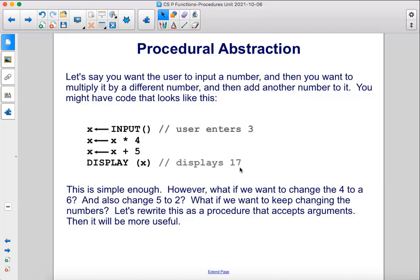This is simple enough. However, what if we want to change the 4 to a 6 and also change the 5 to a 2? What if we want to keep changing the numbers? Let's rewrite this as a procedure that accepts arguments. Then it will be more useful.